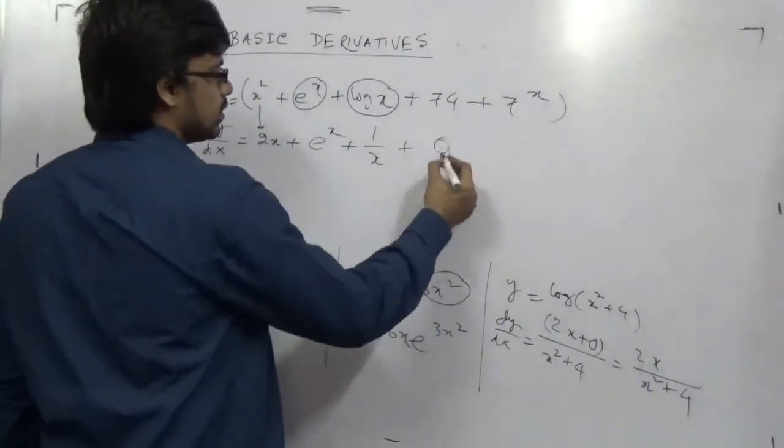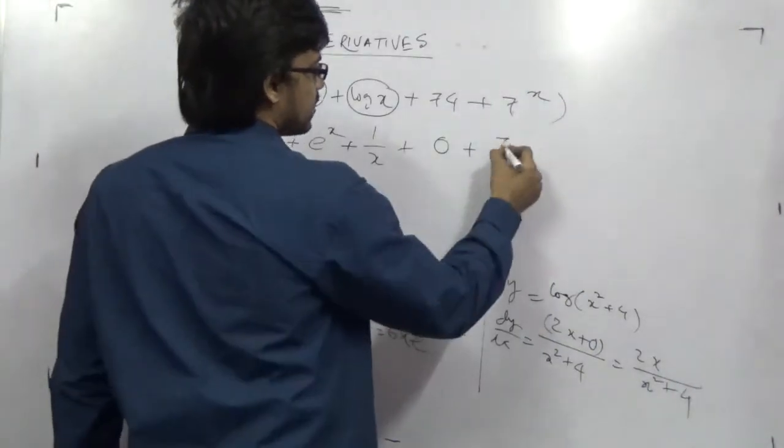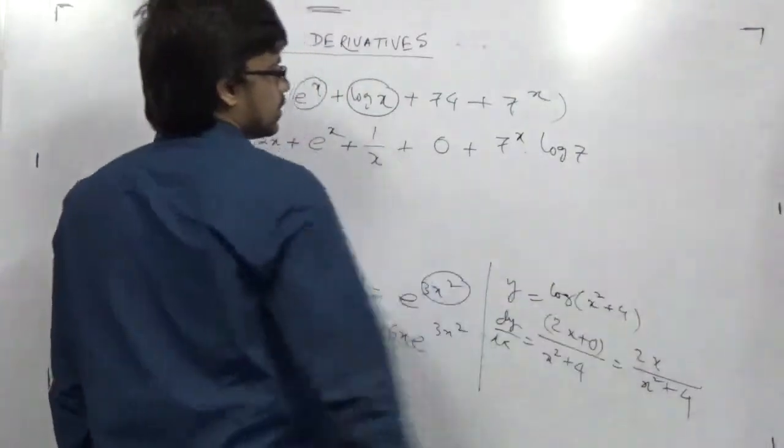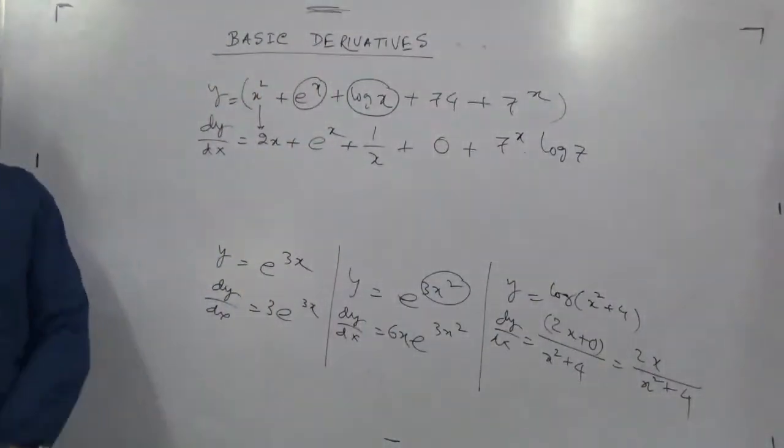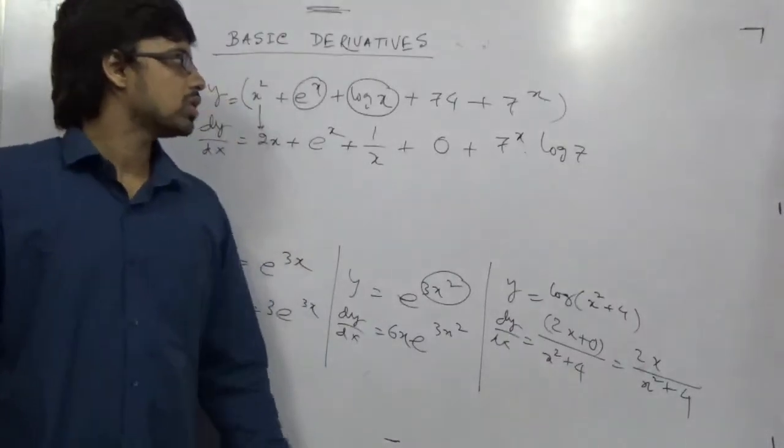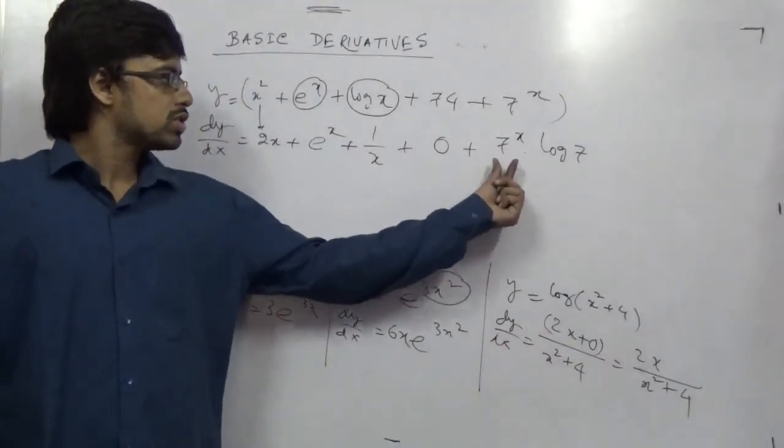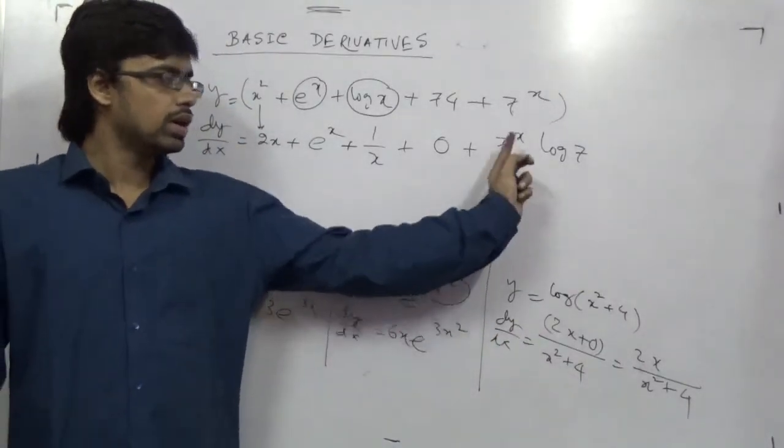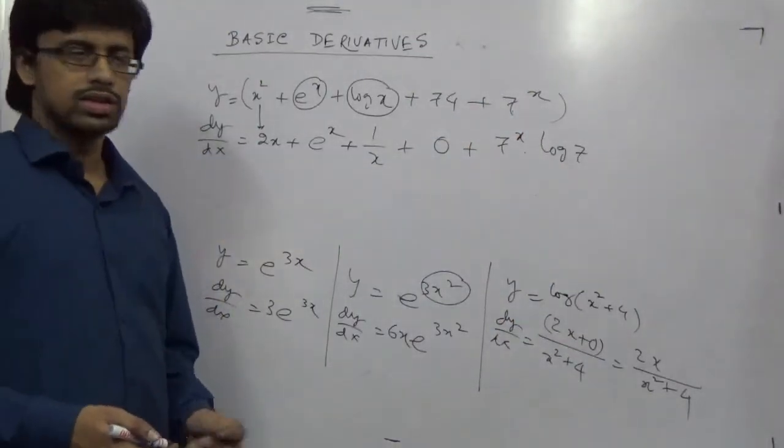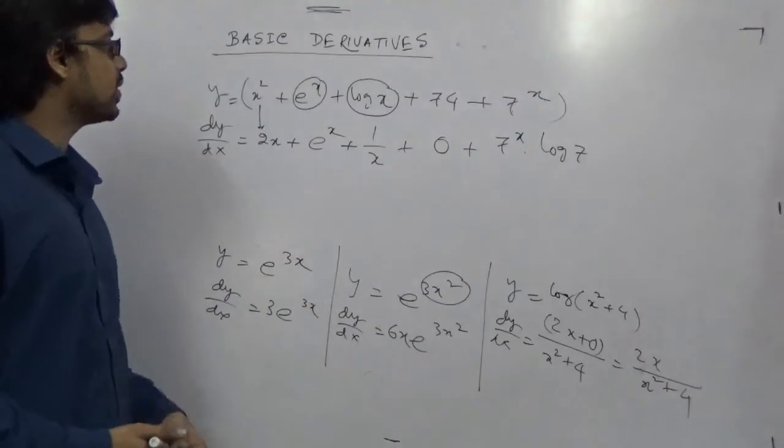Now coming to 74, it will be 0. And 7 to the power x is 7 to the power x into log 7. Why this thing is happening? Because it's a normal function. It's a constant to the power variable. This is the rule. And anything like 7 to the power x plus y, this will be the rule. So this is about the basic derivative.